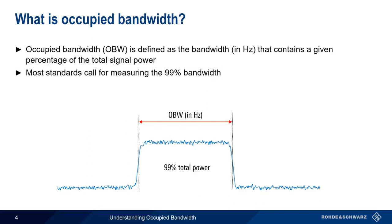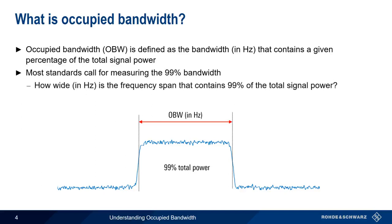Most standards call for measuring the 99% occupied bandwidth — that is, how wide, in hertz, is the frequency span that contains 99% of the total signal power. It is, however, possible to measure occupied bandwidth using different percentage powers.